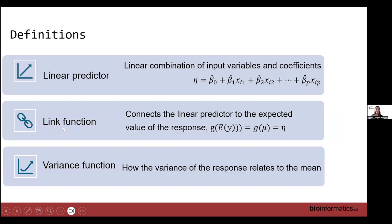We have our link function, which tells us how our response is linked or related to the linear predictor. In GLMs, the outcome is often denoted E(y) — the expected value of y, or equivalently mu for the mean. The link function G is a function of this mean that links our outcome to the linear predictor. That's what defines our generalized linear models.